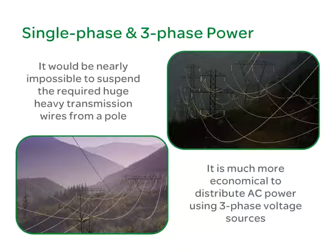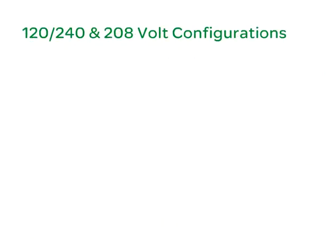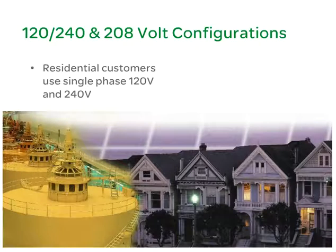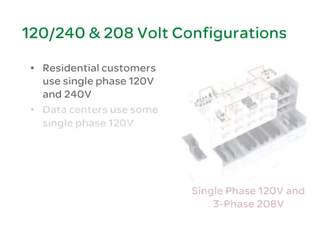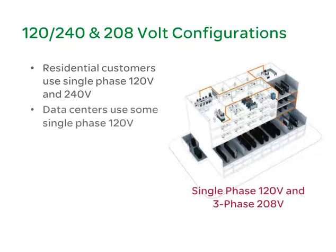Now let's talk about 120, 240, and 208 volt configurations. 120 volts and 240 volts AC are the most common single phase voltages supplied to residential customers. Single phase 240 volts tends to supply larger domestic appliances such as clothes dryers, electric cooking stoves, and water heaters. Single phase 120 volts is also available in some data centers.